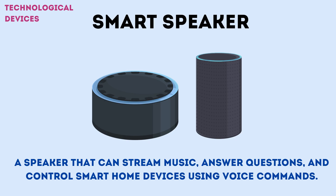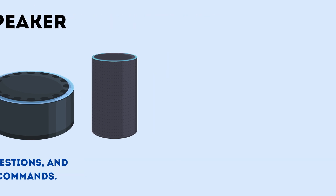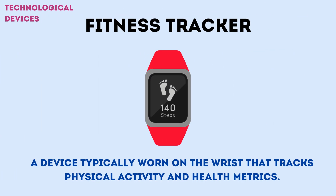A smart speaker is a speaker that can stream music, answer questions, and control smart home devices using voice commands. A fitness tracker is a device typically worn on the wrist that tracks physical activity and health metrics.